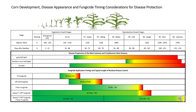We may decide that the foliar application needs to go on at VT if you see a little bit of disease showing up. But I think typically you're going to wind up holding off to R2 or R3 before you would make that follow-up application. And with that, that's going to give you excellent protection all the way through dent and black layer.